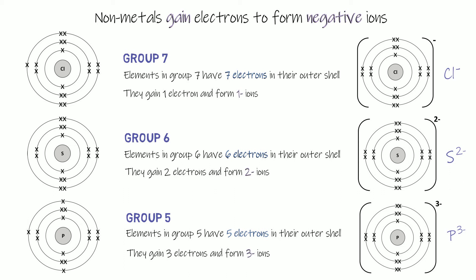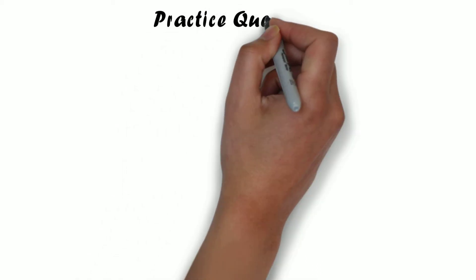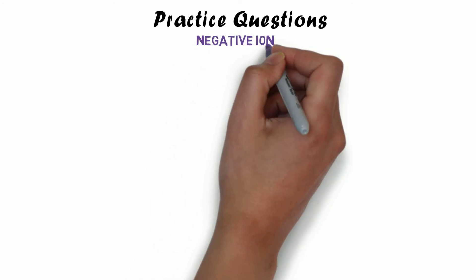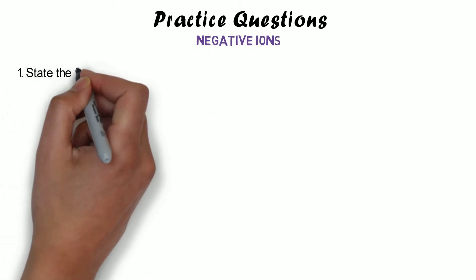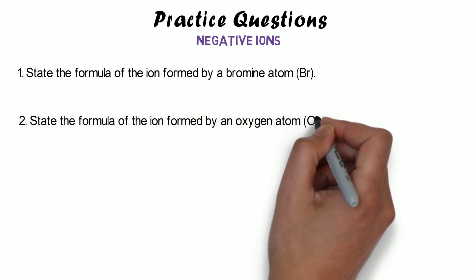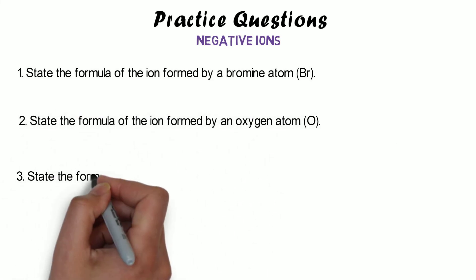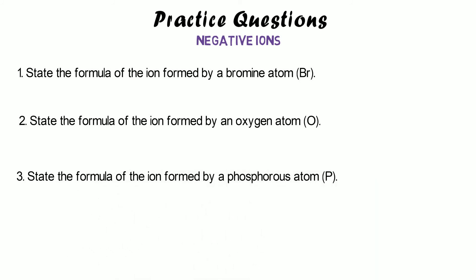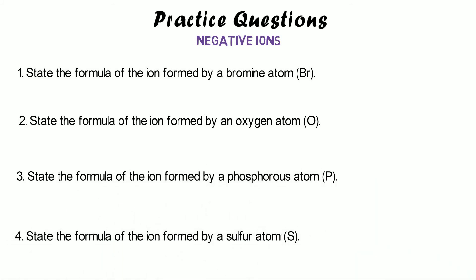Let's have a go at some practice questions for non-metals forming negative ions. State the formula of the ion formed by: a bromine atom, an oxygen atom, a phosphorus atom, and a sulfur atom. Pause the video, use the linked periodic table if you need it, and unpause when you're ready.